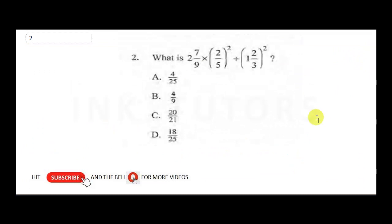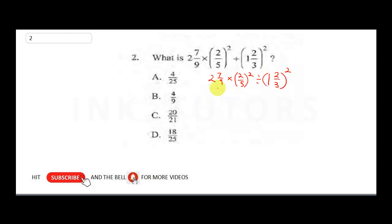Question two: to solve this, change to improper fractions. We have nine and seven-ninths times two-fifths, all squared, divided by one and two-thirds all squared. Nine times two is eighteen, plus seven gives twenty-five, so the first term becomes twenty-five over nine.